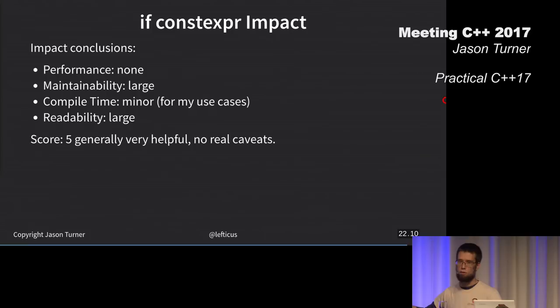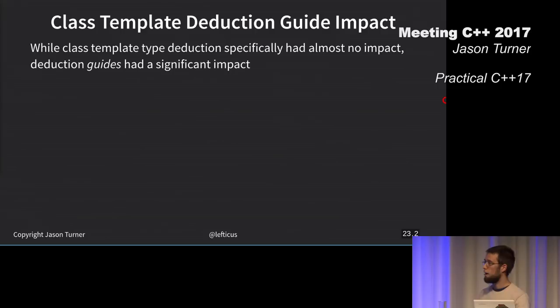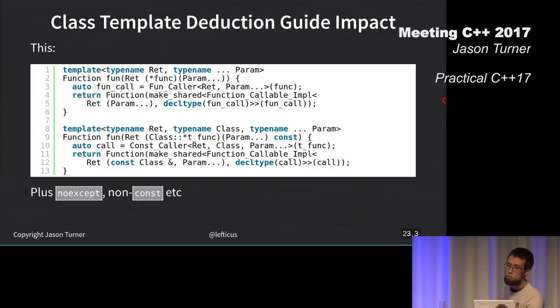Next up, I've got class template deduction guides. I used to have these overloads with noexcept being added to the type system. I know that's a lot of stuff on there, but this is the functions for deducing the types of functions that are passed into ChaiScript. I used to have this. I was able to replace it with a set of deduction guides.